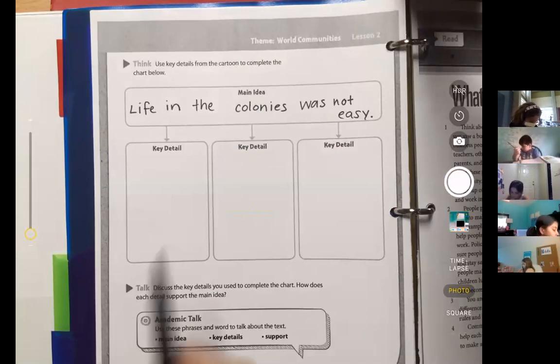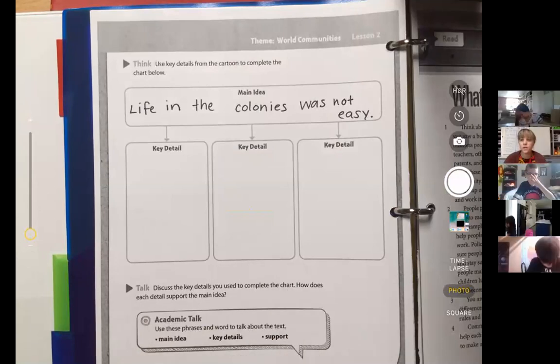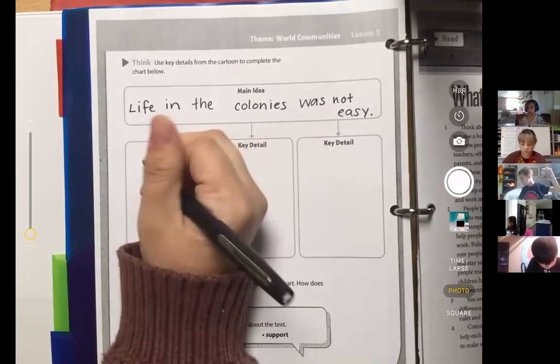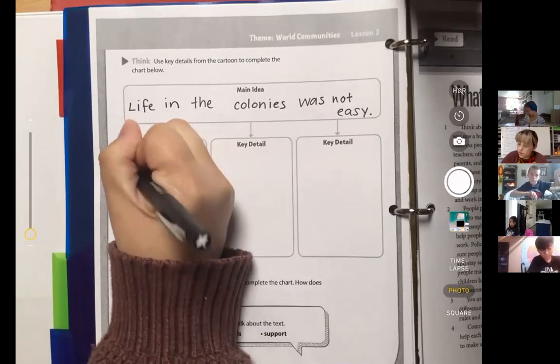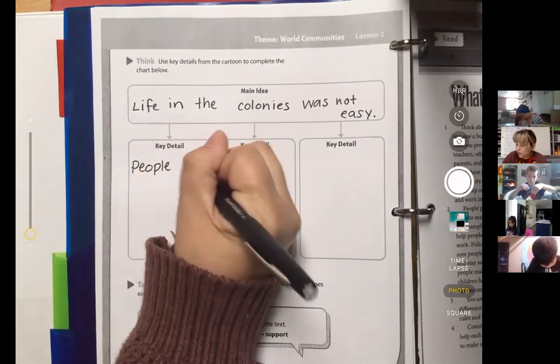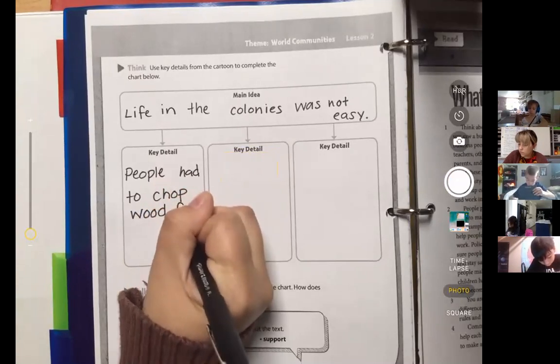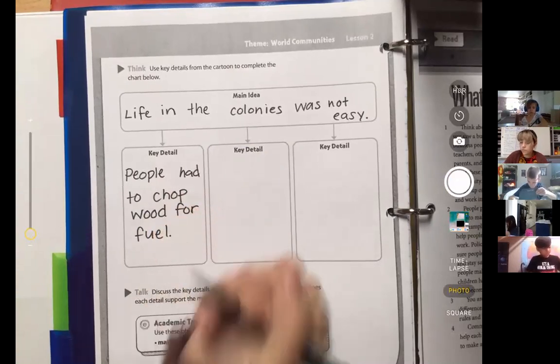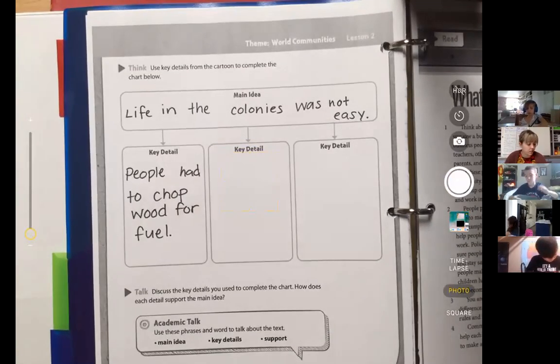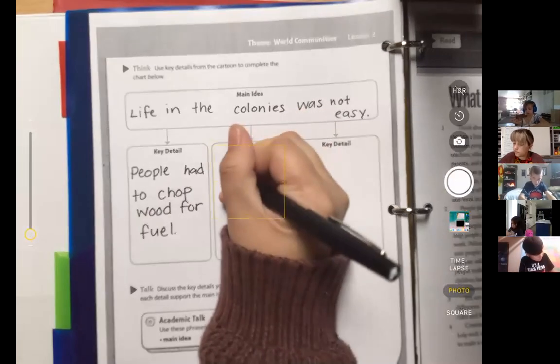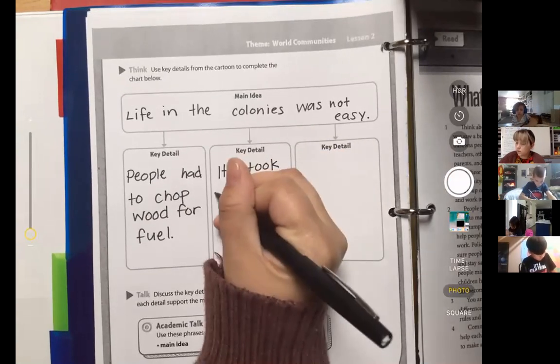And then there were three key details they gave us, right? So there was the detail that Aditri told us. Okay: people had to chop wood for fuel. So that's one key detail.